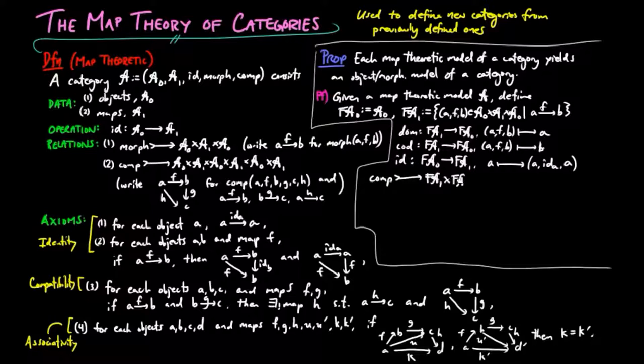We define the relation of composition on triples of F(A) morphisms as comp(AFB, BGC, AHC) if and only if F, G, and H are morphisms in the map theoretic sense.